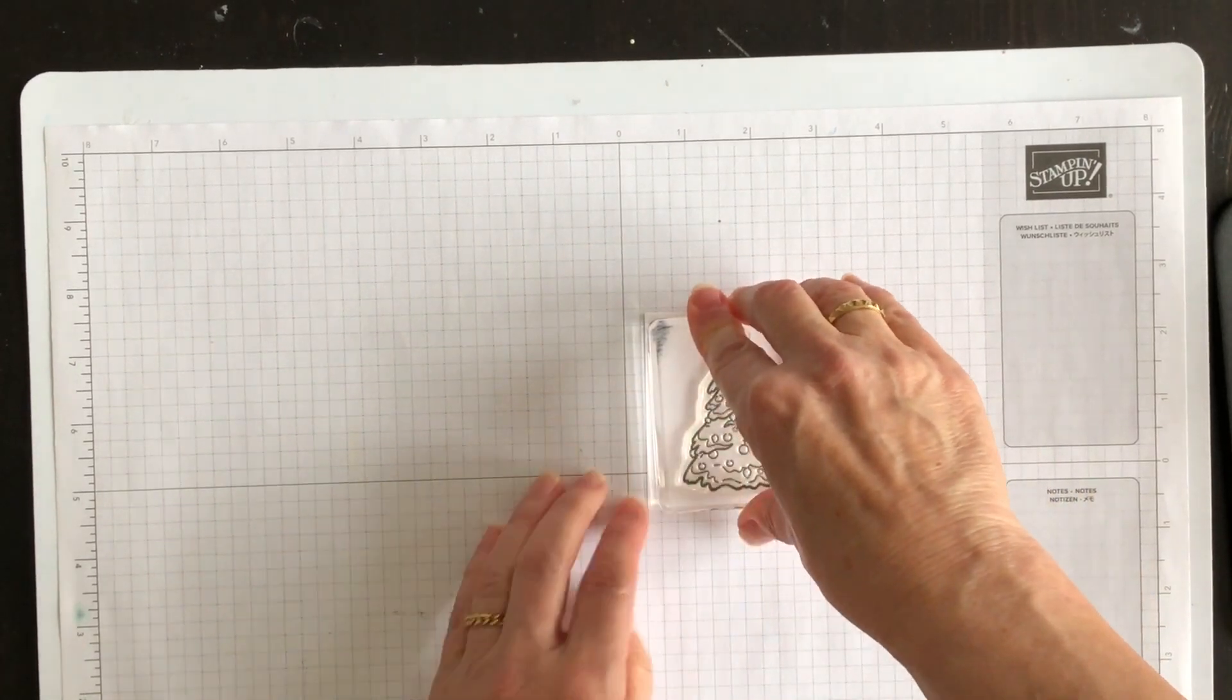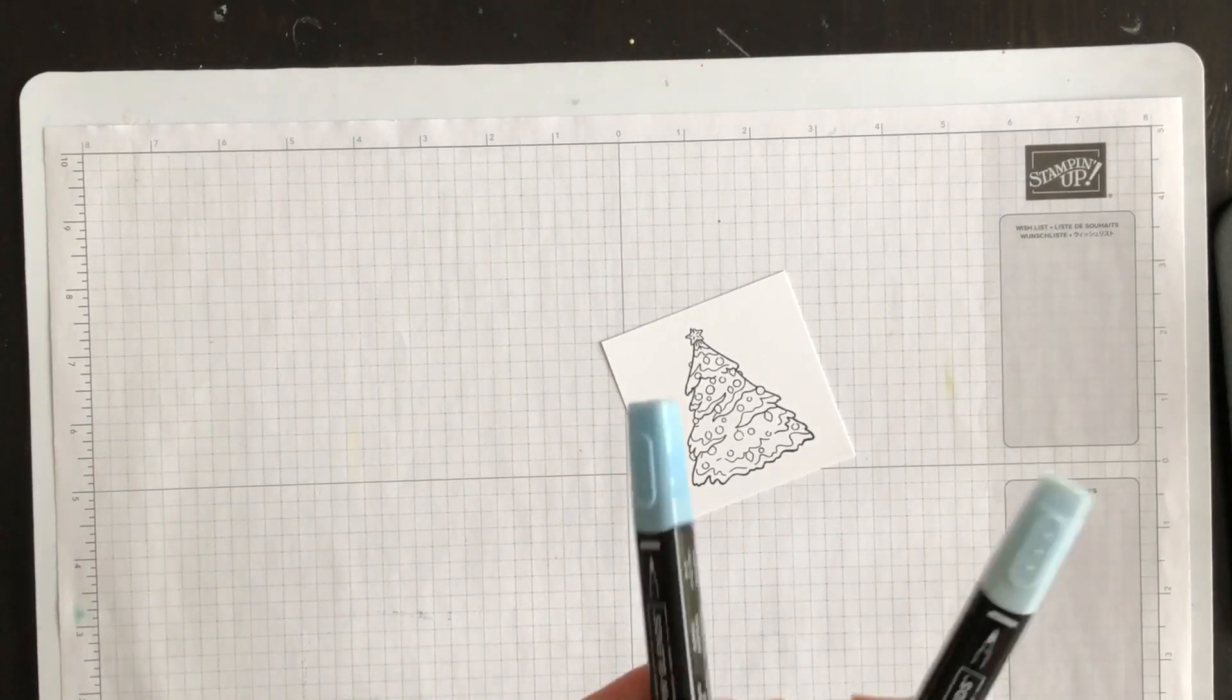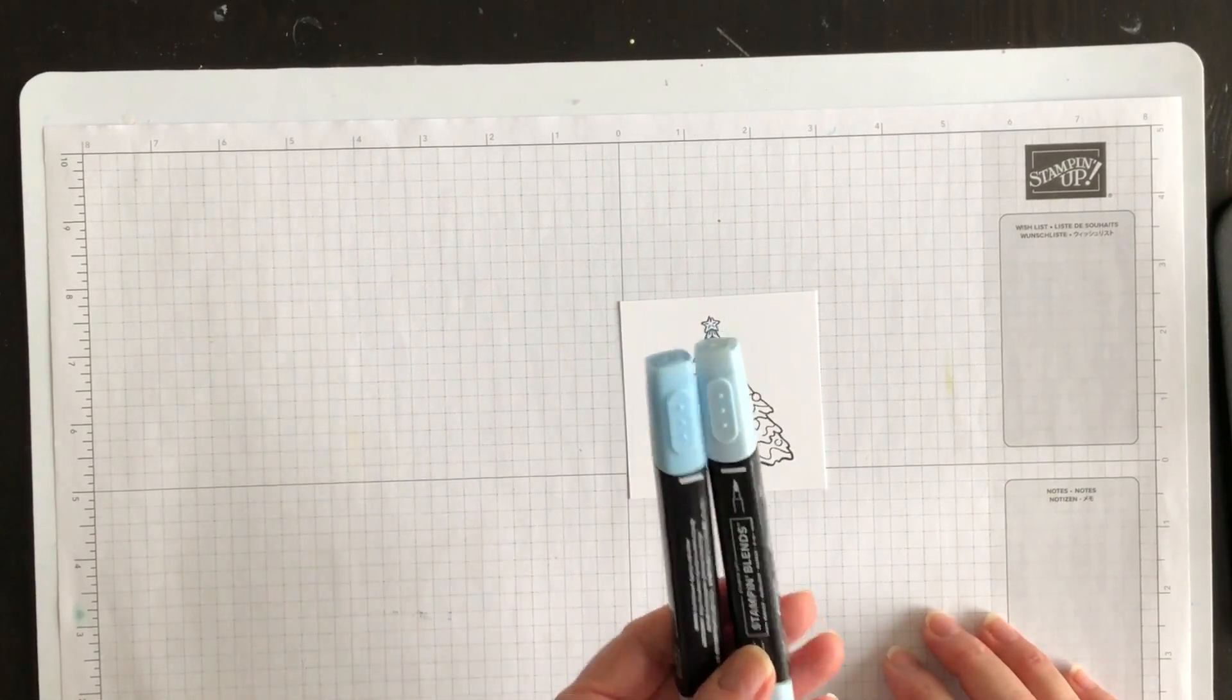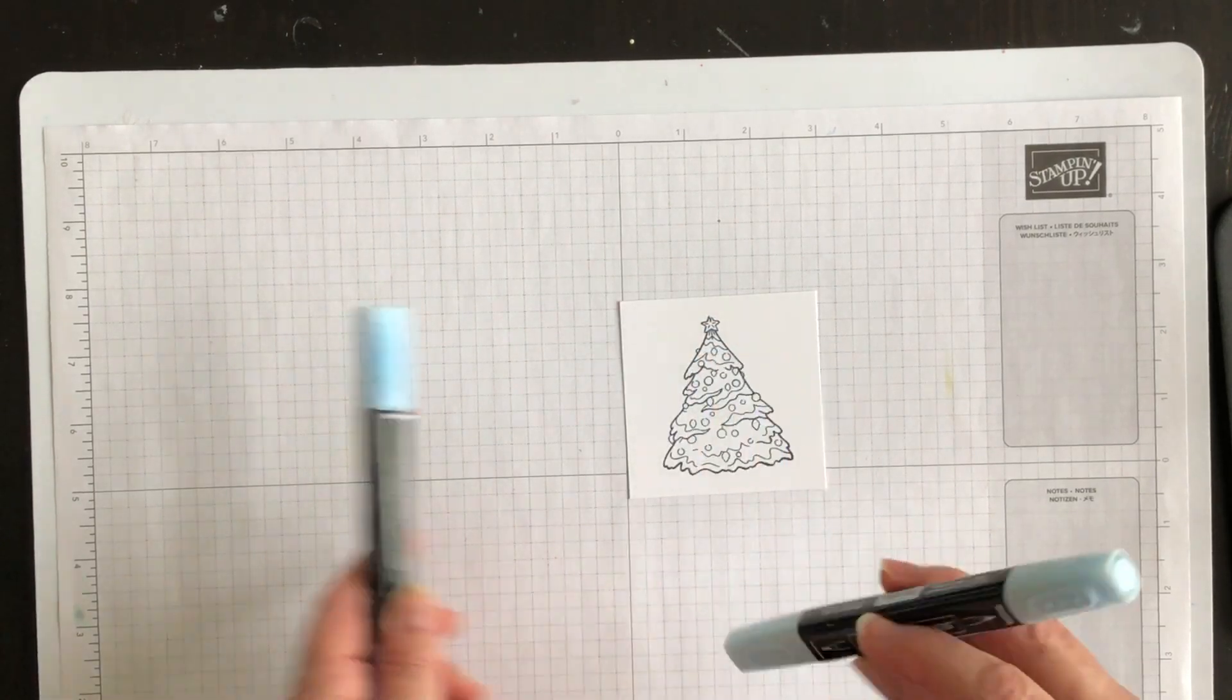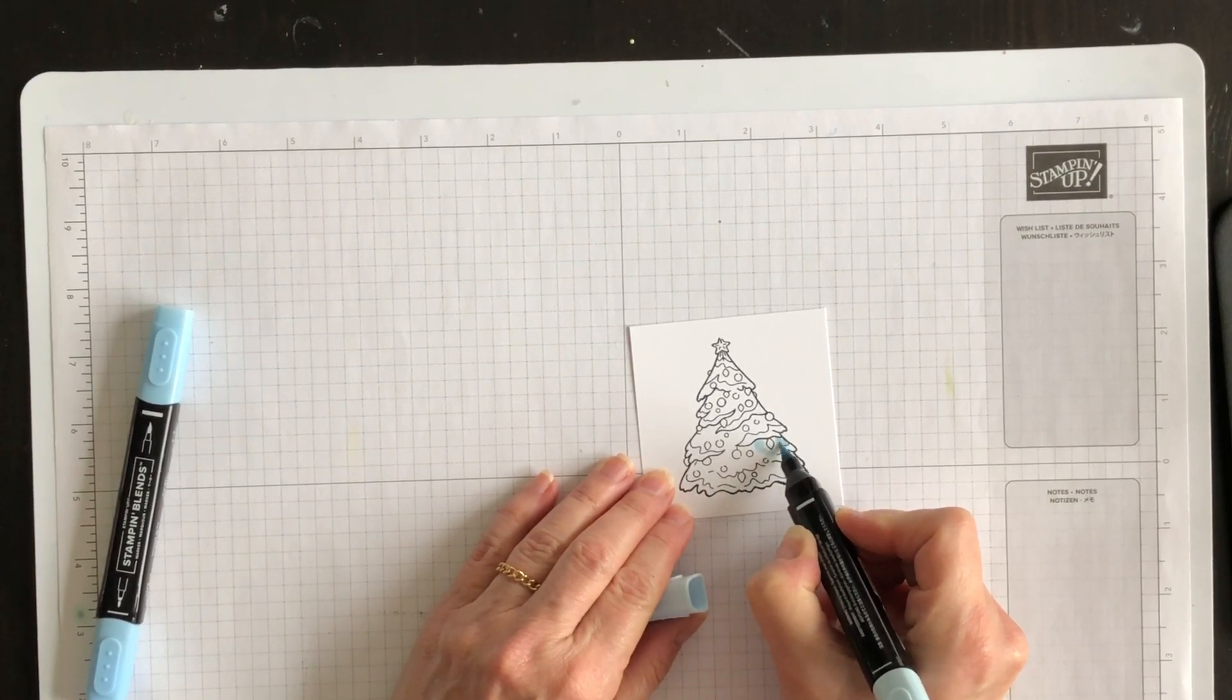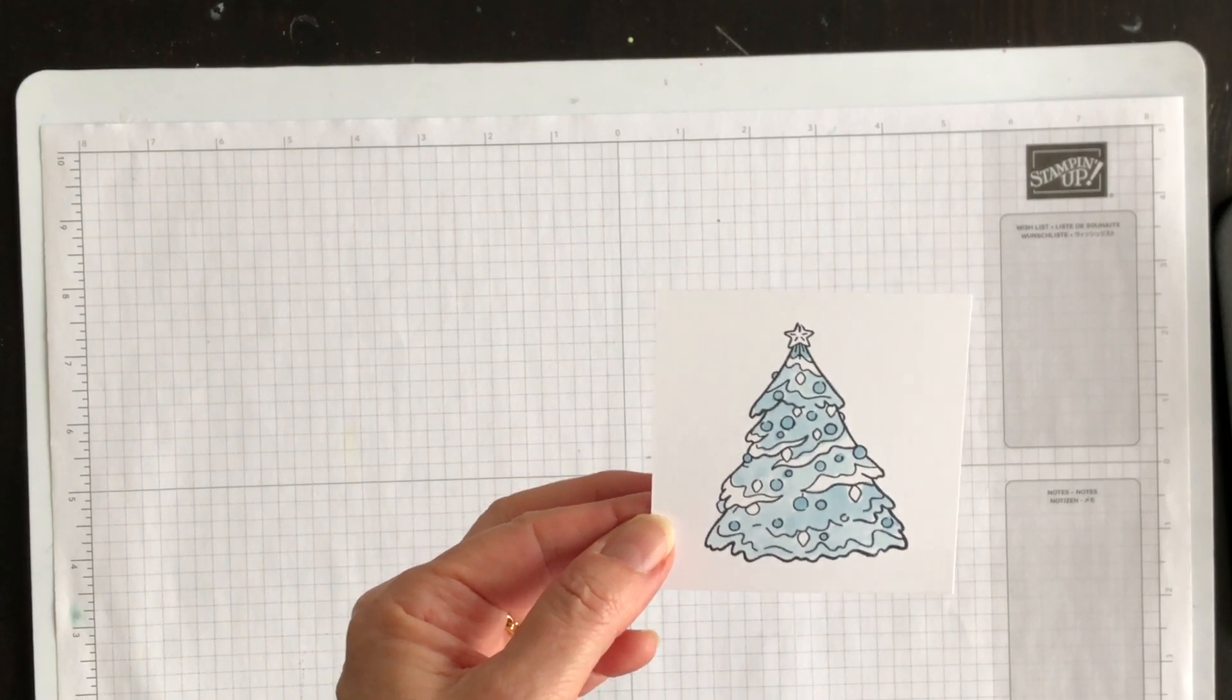And then what I'm going to do is use my Balmy Blue Stampin' Blends to color in the tree. And I'll go ahead and do that and I'll come back and I'll show you what it looks like. All right, I've got this partly colored.